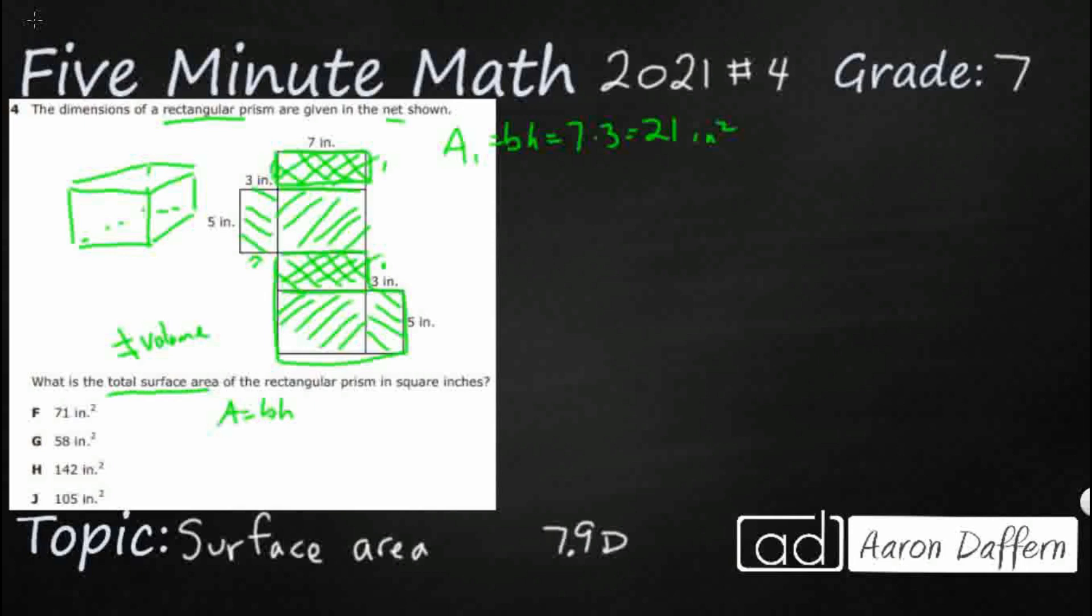21 inches squared. So what I'm going to do is I'm going to go ahead and double that simply because I know there are two of them. So that one's 21 and that one's 21. And so that's going to make 42 because I'm going to end up needing to add all of these up.